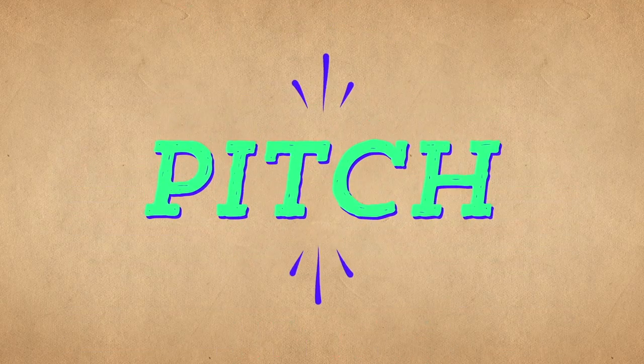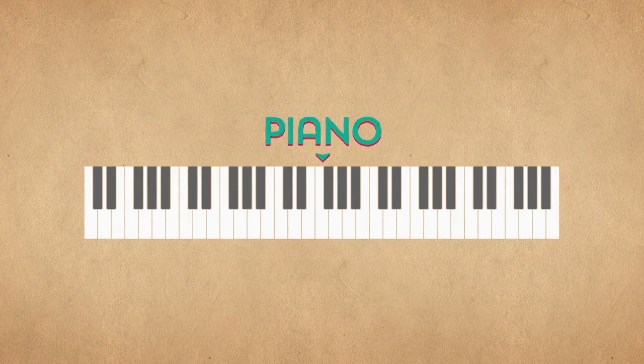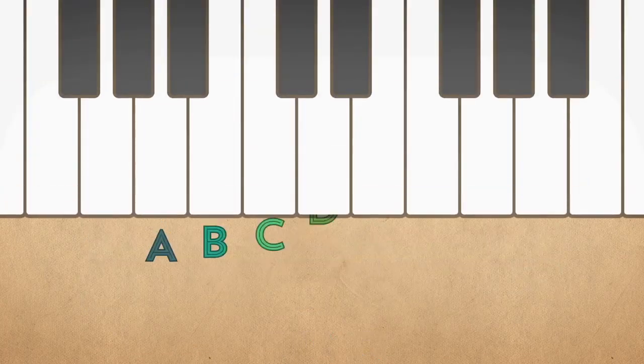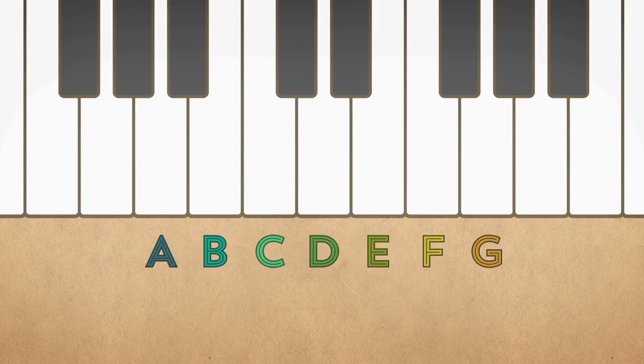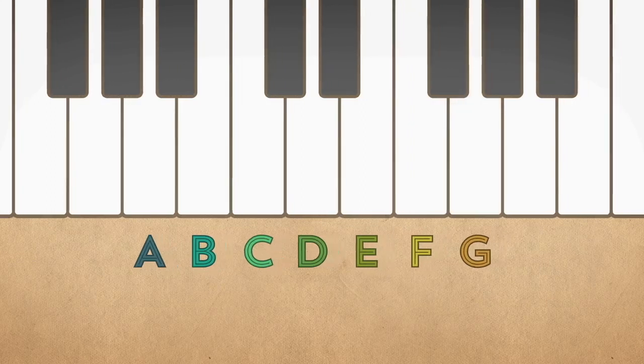Let's start with pitch. To help us out, we're going to use a piano, but this system works for pretty much any instrument you can think of. In the Western music tradition, pitches are named after the first seven letters of the alphabet: A, B, C, D, E, F, and G. After that, the cycle repeats itself.